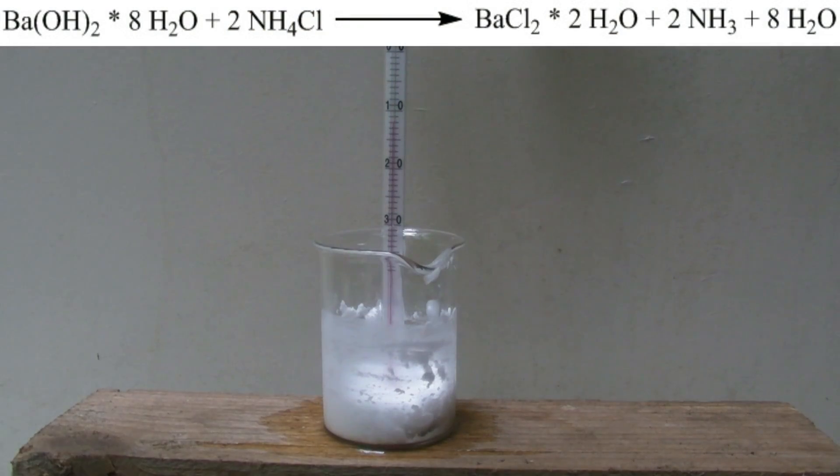Following reaction takes place. The barium hydroxide reacts with the ammonium chloride to form barium chloride and ammonia gas.